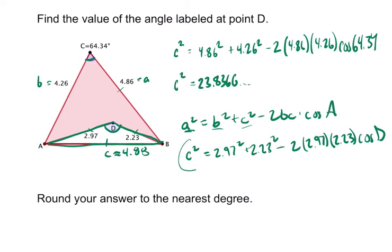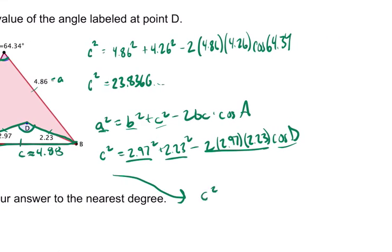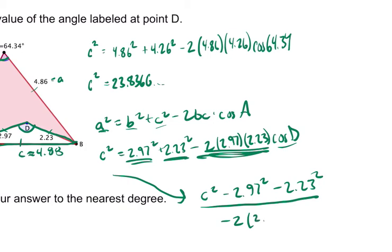So I didn't write in the value of this because it's a long decimal. I don't want to deal with that. But I'm just leaving it at that variable so now I can move things around. I'm trying to solve for the cosine of D. How am I going to do that? I'm going to subtract these two terms and then divide by this thing here. So let's do that. So we get C squared minus 2.97 squared minus 2.23 squared. Again, I just subtracted those over. And then I'm going to divide all of that by this thing right here. Negative 2. Don't forget that negative. Times 2.97 times 2.23. And that is the cosine of D.